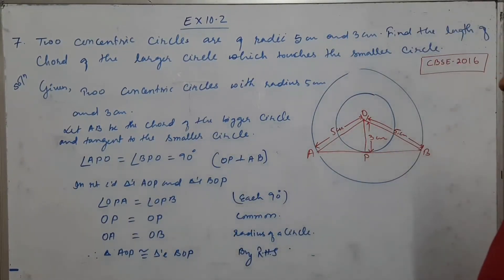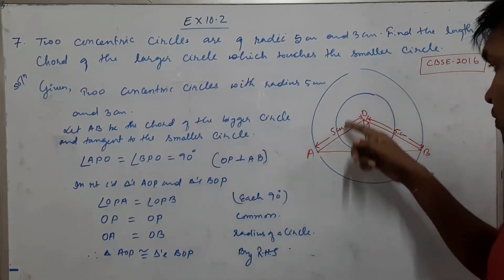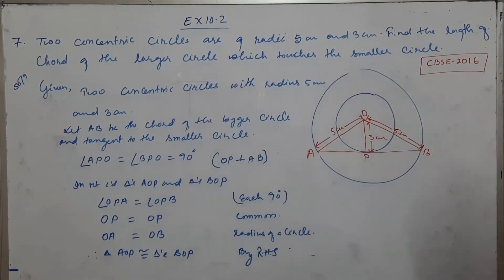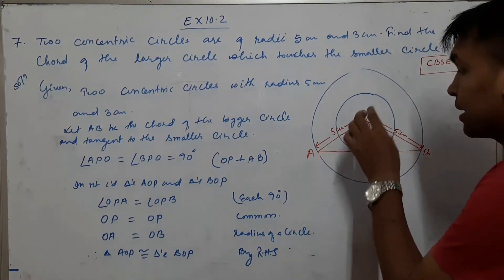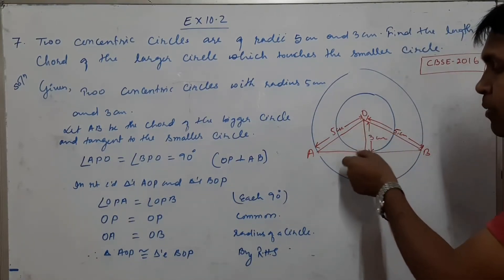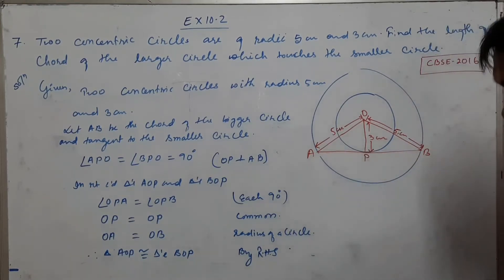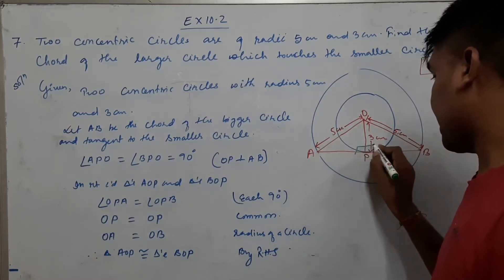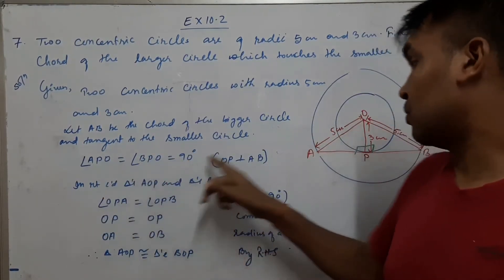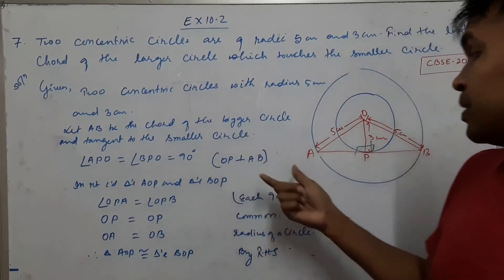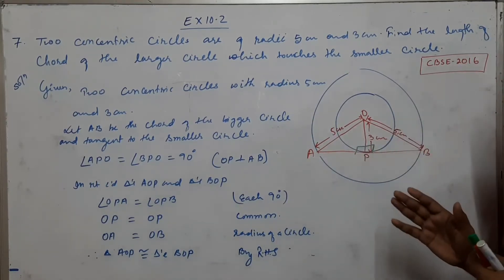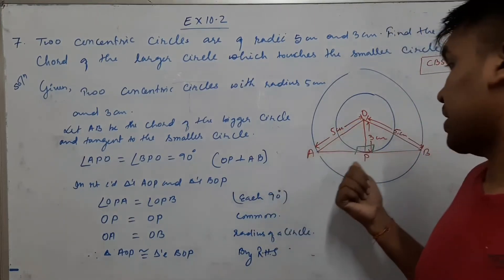Since AB is tangent to the smaller circle at point P, and OP is the radius of the smaller circle, OP is perpendicular to AB. Therefore angle APO and angle BPO both equal 90 degrees, because the radius is always perpendicular to the tangent. Now we consider triangle AOP and triangle BOP to prove they are congruent.